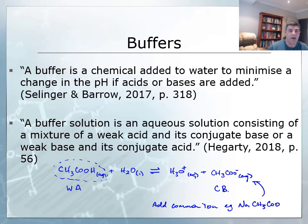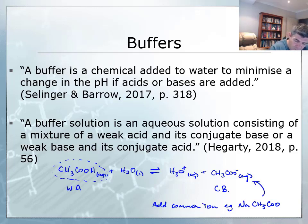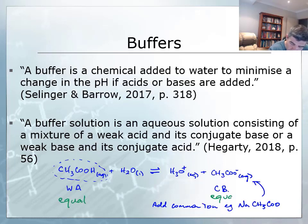We know that in an equilibrium system this will cause a shift to the left to re-establish equilibrium. But if we add sufficient conjugate base to our solution, we will effectively have equal concentrations of both our acid and our conjugate base — and what we want is for these two to be equal.